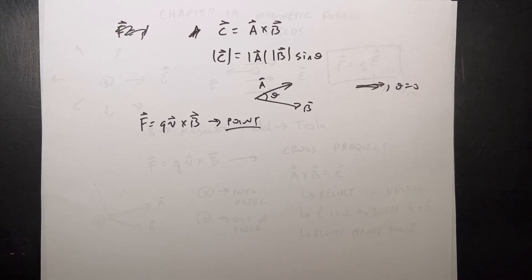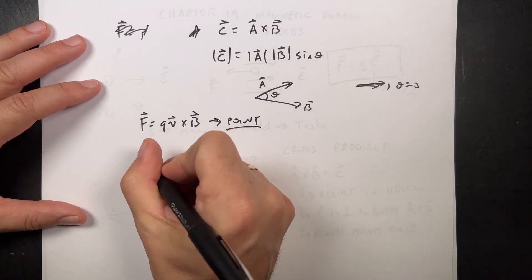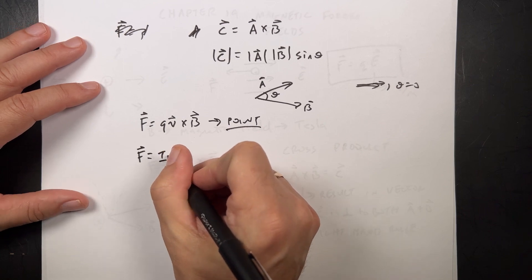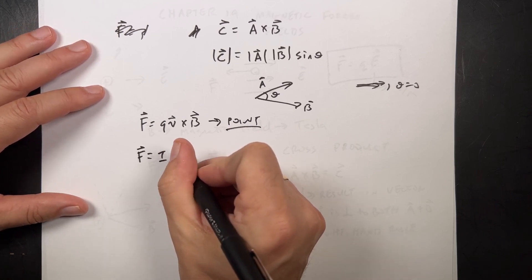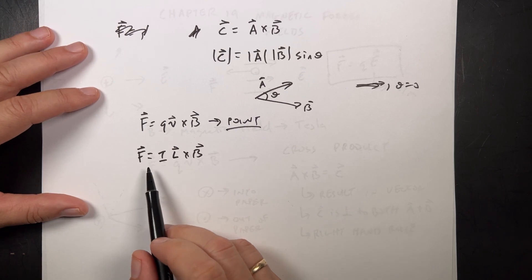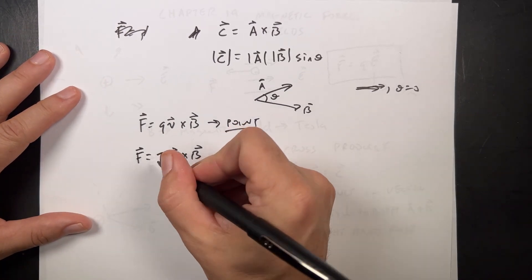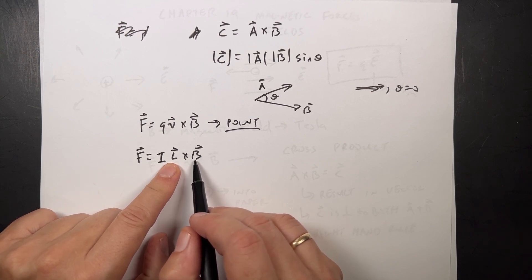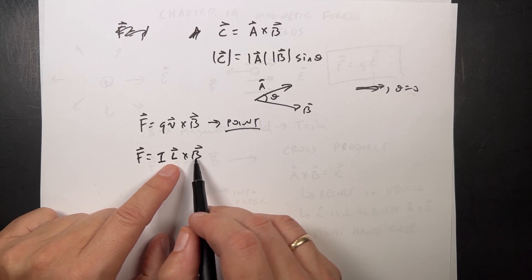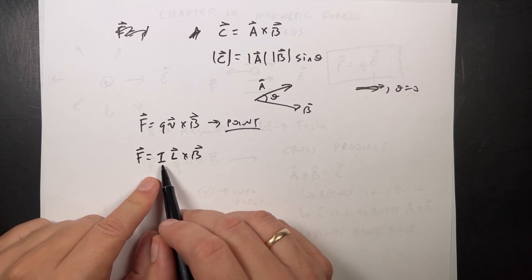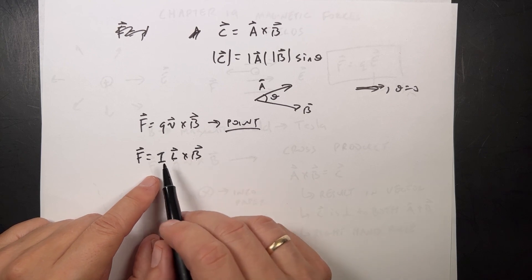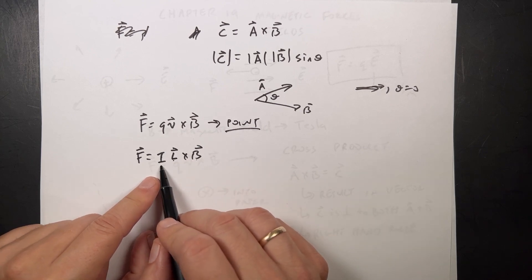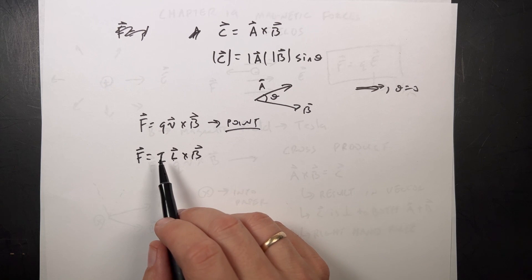Now I'll show you the magnetic force on a wire. It turns out we can write this as F equals I times L cross B. This is the magnetic force on a wire. It's a bit of a simplification because it assumes the length of the wire with respect to the magnetic field is constant, but we'll deal with simple cases. Here, I times L plays the same role as Q times V, and I is the conventional current — the direction positive charges would be moving.